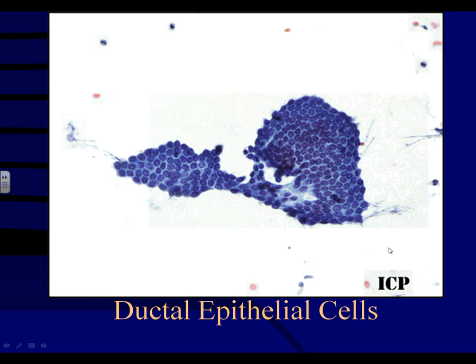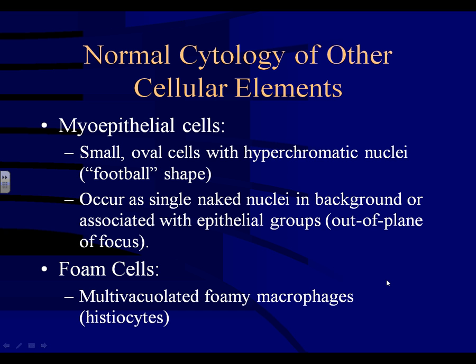Myoepithelial cells are very important to recognize. They are small oval cells with hyperchromatic nuclei, slightly smaller than ductal cells with a football shape. They often occur as single naked nuclei in the background without cytoplasm, or they can be associated with the ductal epithelial groups — you have to focus out of the group a little bit to see them overlying it.